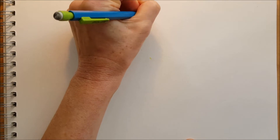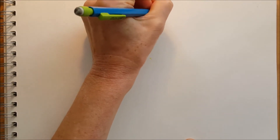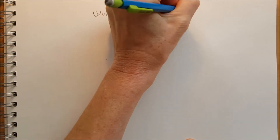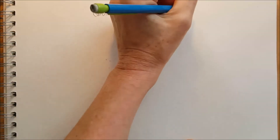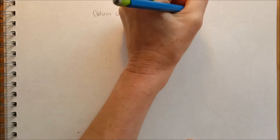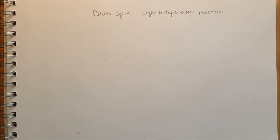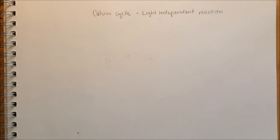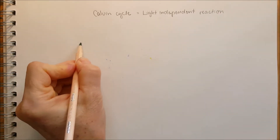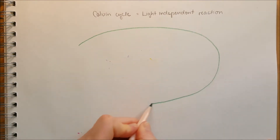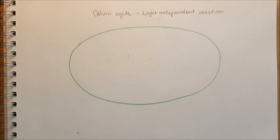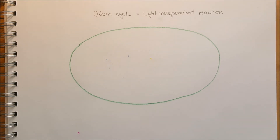Photosynthesis part 2 is about the light-independent reaction that does not need light. It used to be called the dark reaction, but that name is misleading because it can also happen in the light — it's just not dependent on light. That's why it's called the light-independent reaction, or the Calvin cycle.